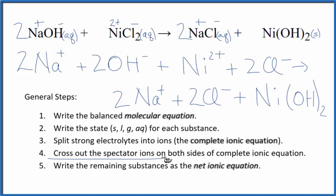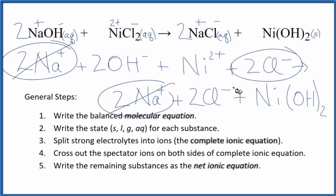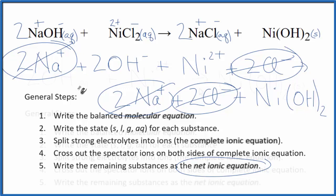Now we can cross out spectator ions on both sides of the complete ionic equation. They haven't changed, so we're not interested in them. We have in the reactants up here, we have two sodium ions, and then in the products, we have two sodium ions. Cross those out. Two chloride ions, and again in the products, two chloride ions. Cross those out. But what's left, that's the net ionic equation for NaOH plus NiCl2. I'll clean this up, write the states in, we'll have our net ionic equation.